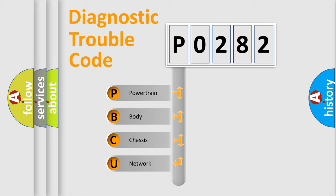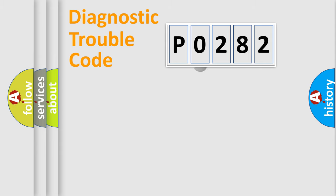We divide the electric system of automobile into four basic units: Powertrain, Body, Chassis, and Network. This distribution is defined in the first character code.